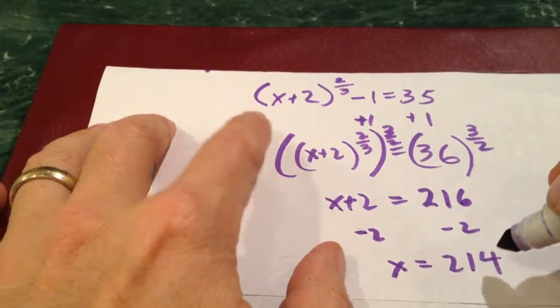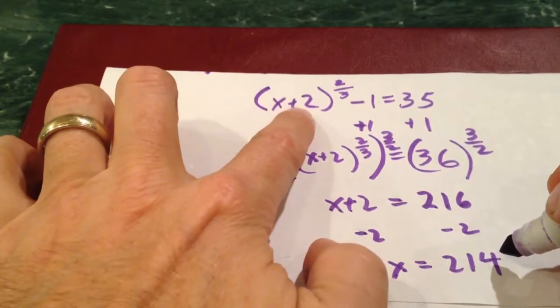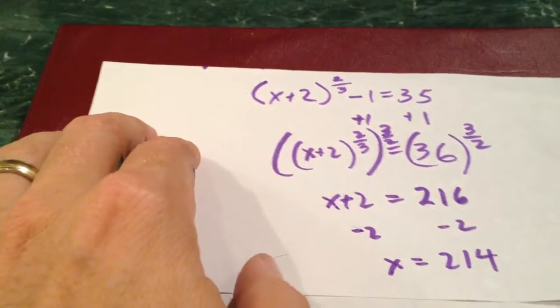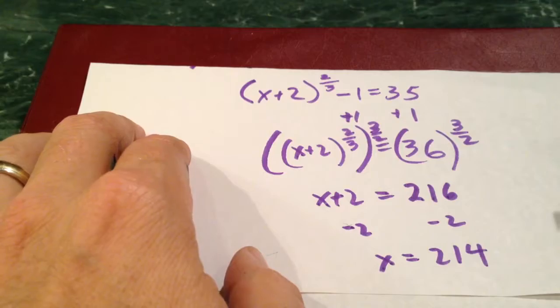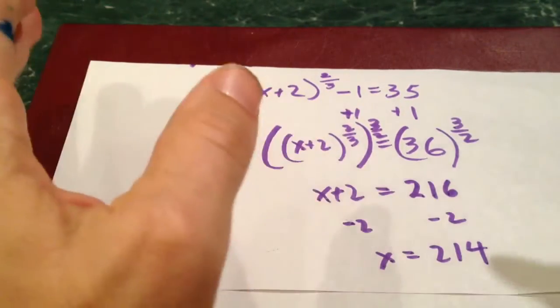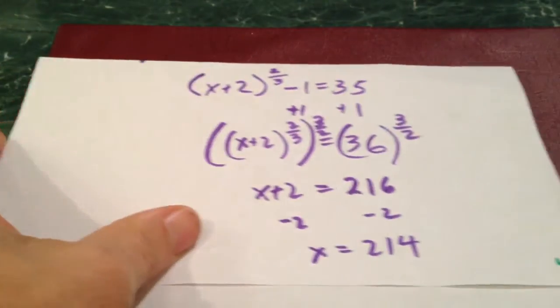And I can check this now. I can do 214 plus 2, raise it to the 2 thirds, minus 1, and it better give me 35 or I've made a mistake. I often will check these because it's easy to maybe do something wrong along the way.